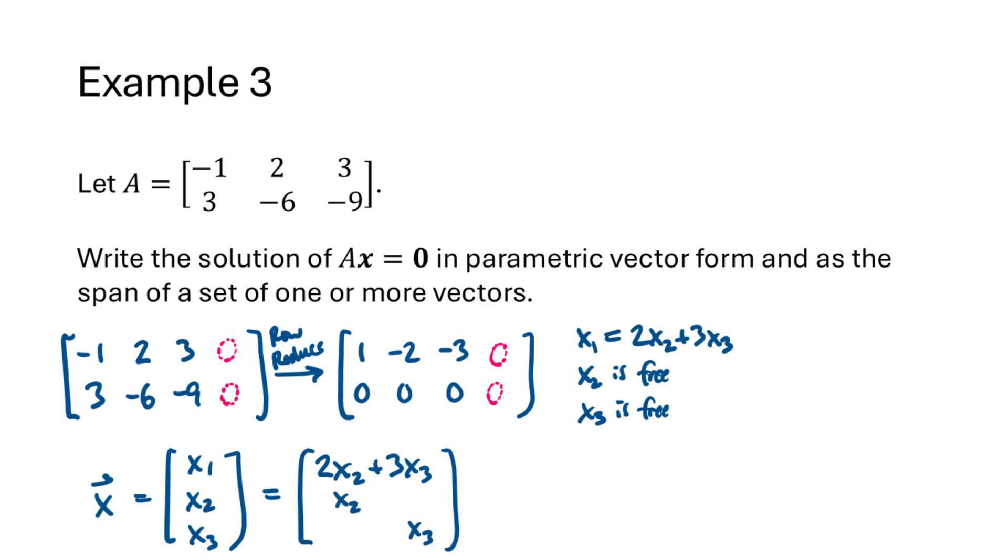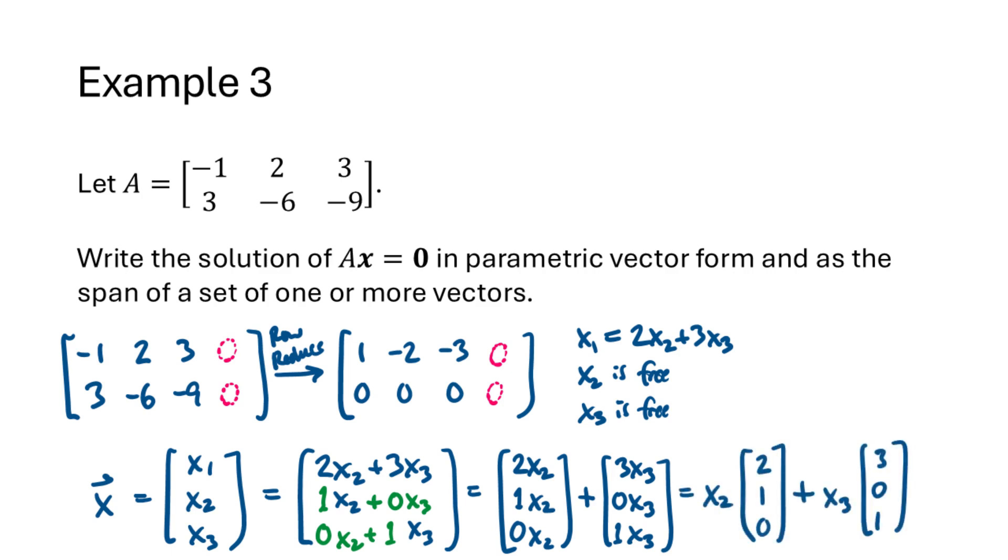Notice the way that I've shifted x2 to be underneath the x2 in the x1 formula, and the x3 being under the x3 in the x1 formula. What we can do is fill in the missing coefficients so that each variable is written as a combination of x2 and x3. So x1 is 2x2 plus 3x3, and x2 is 1x2 plus 0x3, and x3 is 0x2 plus 1x3. Now we split this vector up, putting all the x2s together and all the x3s together, and then we factor out the x2 and the x3 so that what we get looks like a linear combination of the vectors 2, 1, 0 and 3, 0, 1.